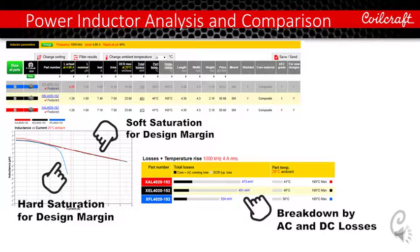We also show a loss graph. It breaks down the total losses by AC and DC losses. XAL and XEL by design, they have the same DC losses. So all the differences between these two parts comes from the AC losses, which is frequency and ripple current dependent. And these AC losses are based on our real measurements and the Coilcraft complex models, which is the greatest industrial loss estimation at this time.